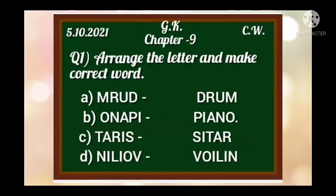Students, now we will discuss the copy work. First of all, please take out your General Knowledge copy. Write down today's date on the top left corner — the date is 5 October 2021. Then at the top, write down Chapter 9, and at the right corner, please write down 'Class Work'.